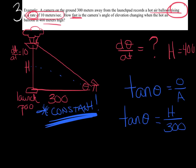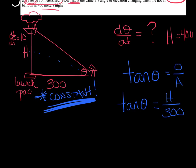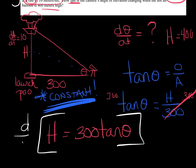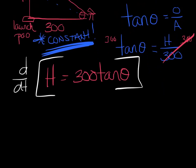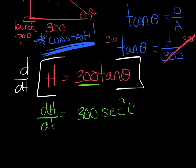I like to get the variable by itself and avoid fractions, so I'll multiply both sides by 300: H = 300 tan θ. Now I'll derive with respect to time. Variables without T get a d-whatever/dt: dH/dt = 300 · sec²θ · dθ/dt — that's the chain rule on tangent, giving secant squared of theta times dθ/dt.